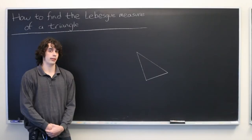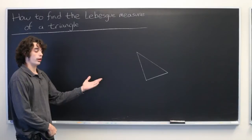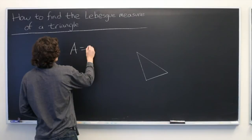So when you're asked to find the Lebesgue measure of a triangle, what you're really being asked is for its area, which as we all know is simply base times height divided by 2.